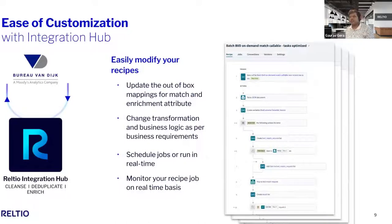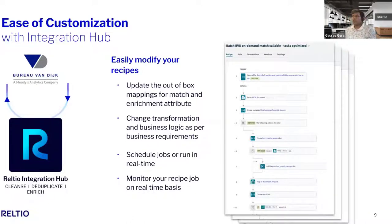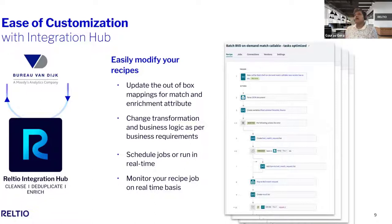Realtio Integration Hub is the backbone of this integration. All recipes are available out of the box, with certain mappings available, but you can modify those recipes once they're in your environment to capture business transformations or change the transformation and mapping logic. You can schedule jobs, run in real-time mode, access data from your queue, and monitor jobs using the Realtio Integration Hub dashboards. This is how we've eased out building and customizing configurations for this integration.